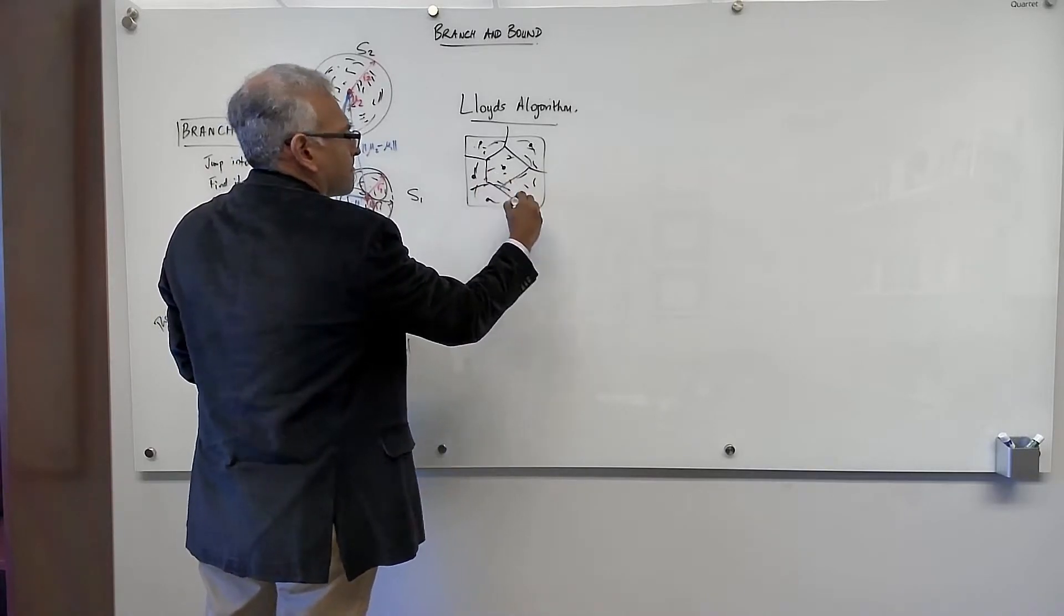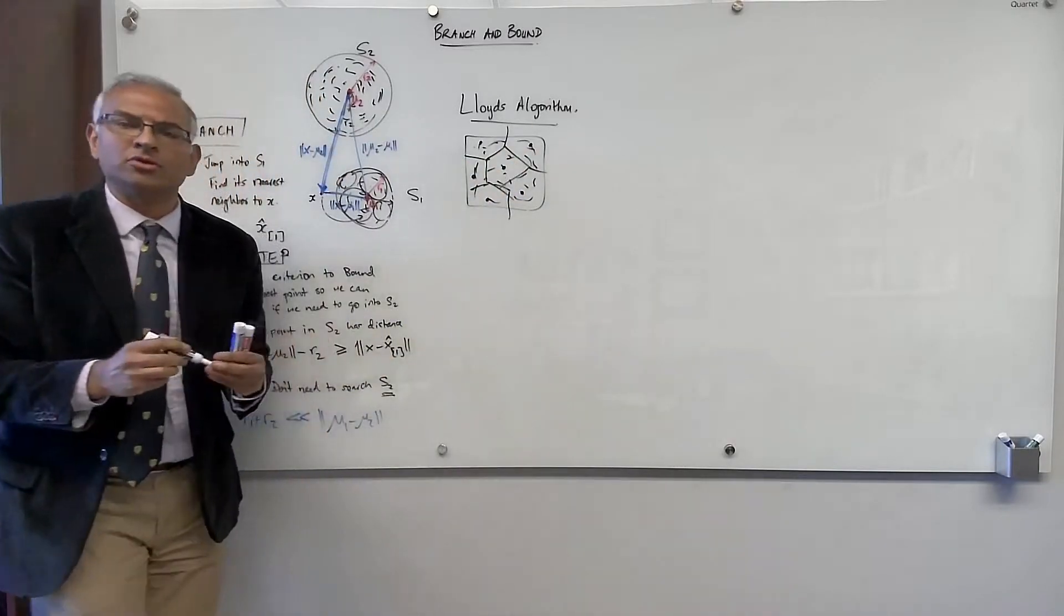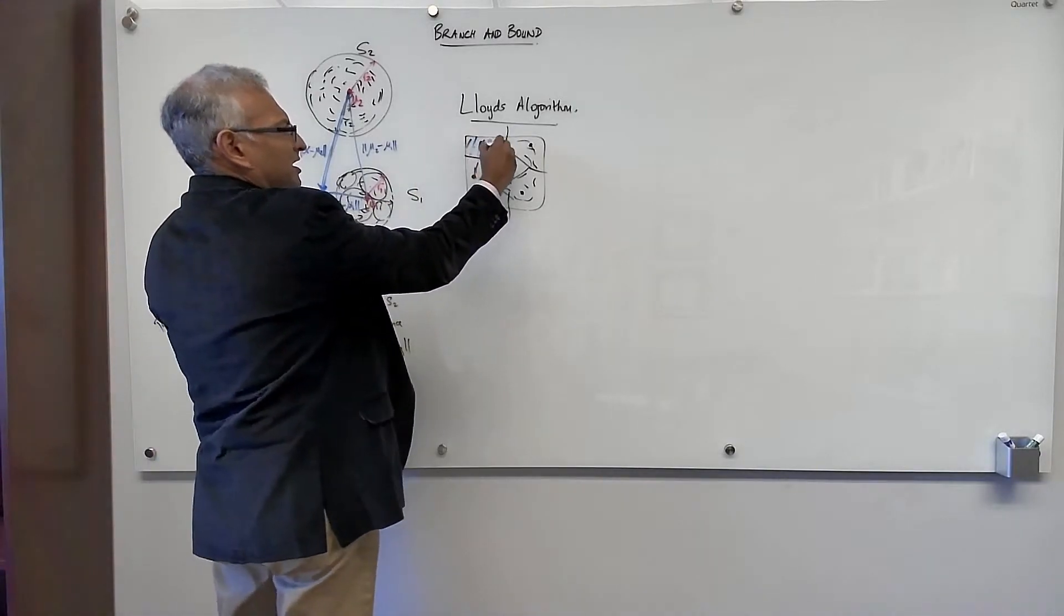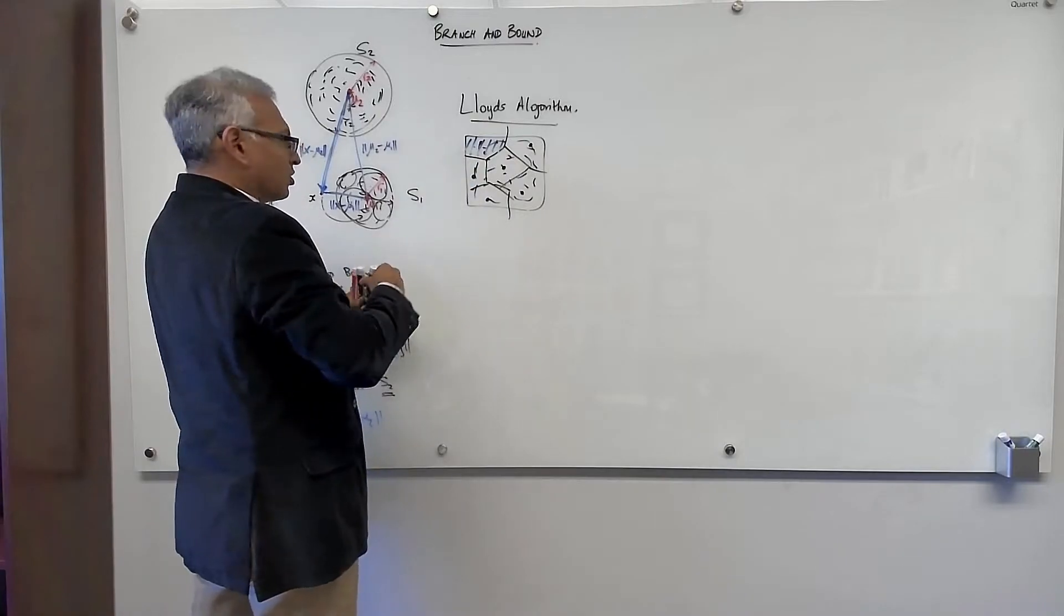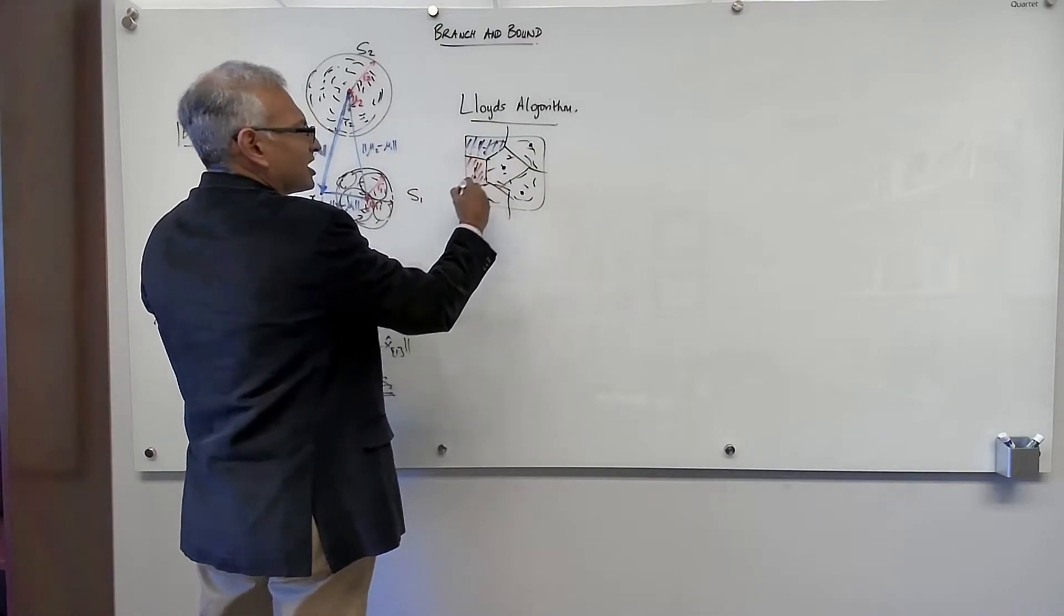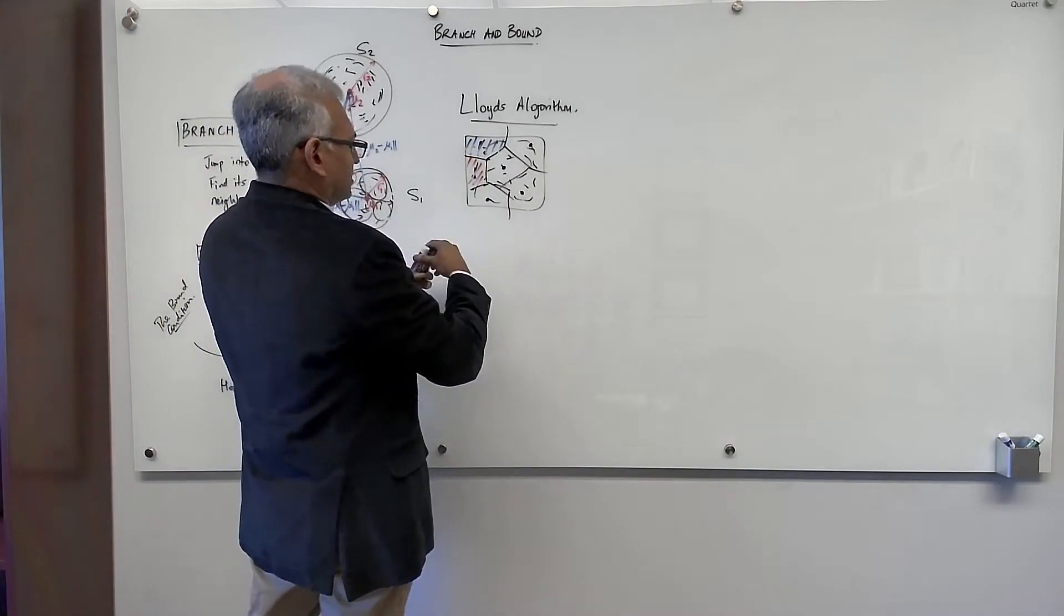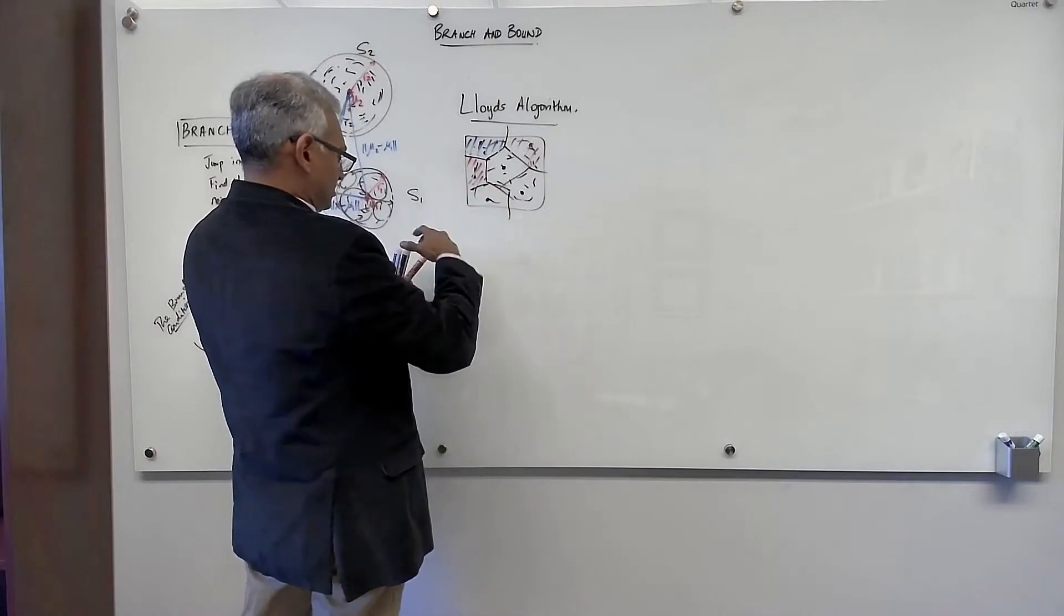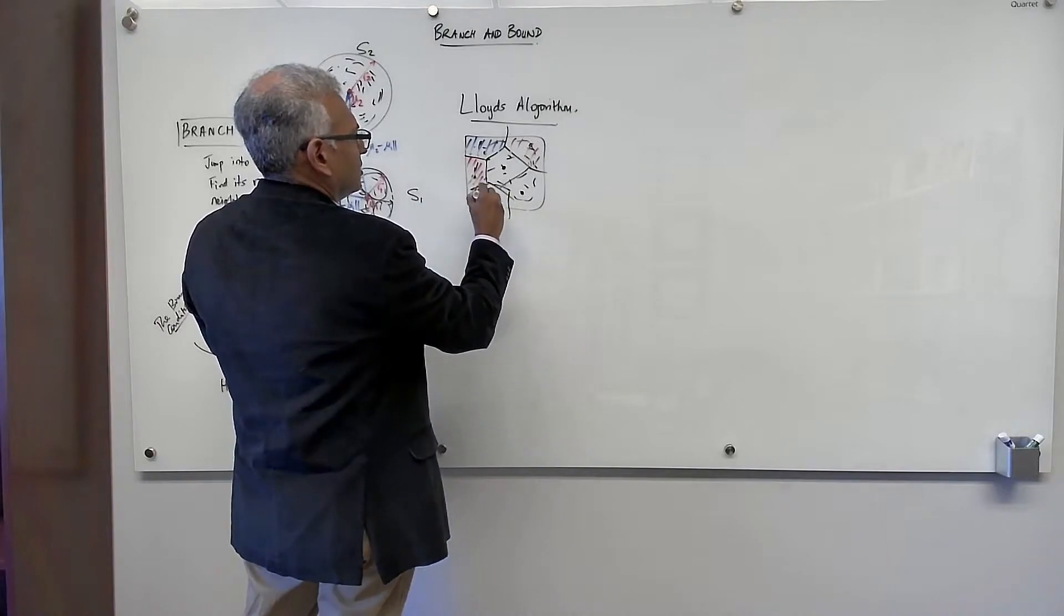So you can construct the Voronoi regions corresponding to each center. And now all the data points that are in owned by that center belong to that cluster. All the data points owned by this center belong to this cluster and so on. All the data points owned by this and so on and so forth. So all these points, and I'll try to do it with two colors if possible, but I don't think I will succeed.